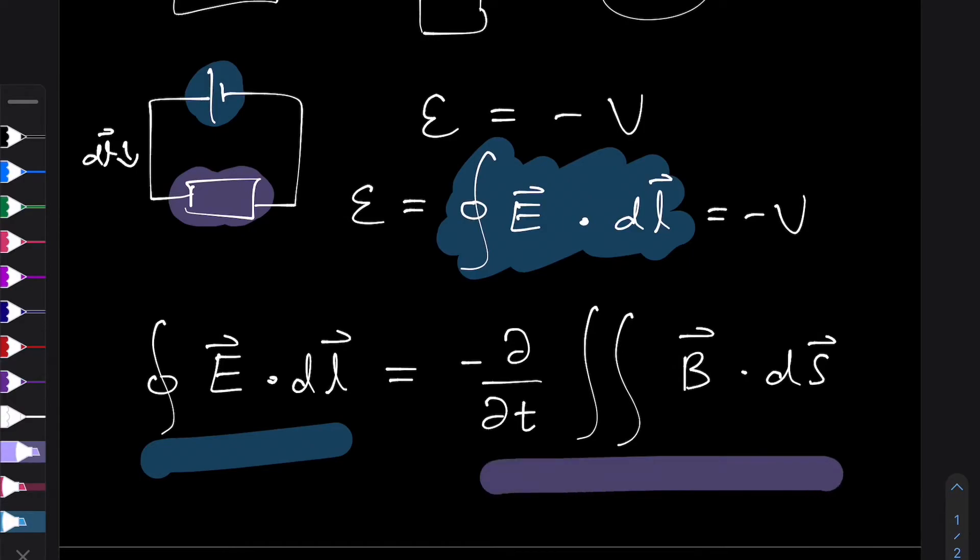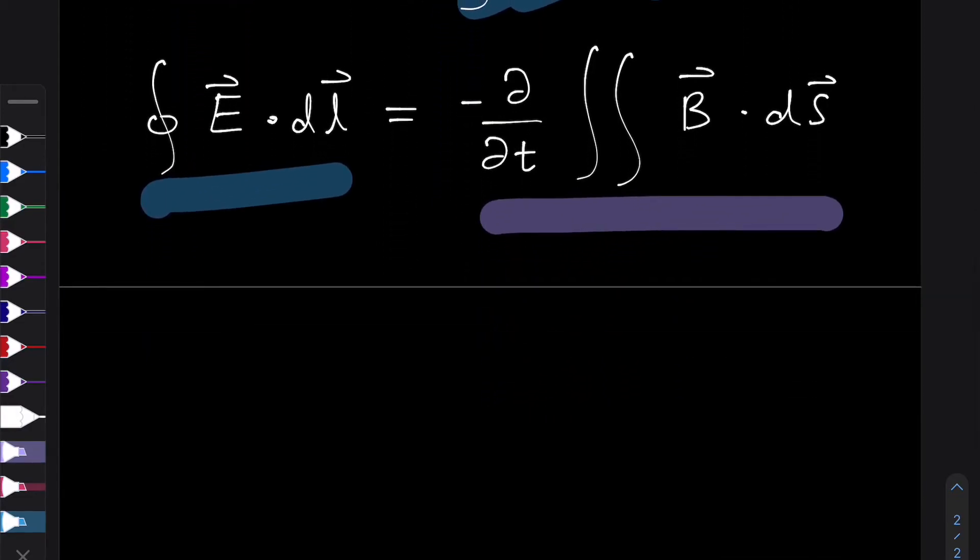And we can make the maths a bit neater by converting this single integral on the left into a double integral using Stokes theorem, because we know that a loop integral of a vector field is equal to the surface integral of the curl of that vector field, in this case, the electric field, with the dS being the unit area. And that's equal to,